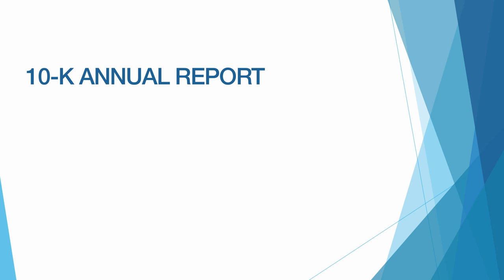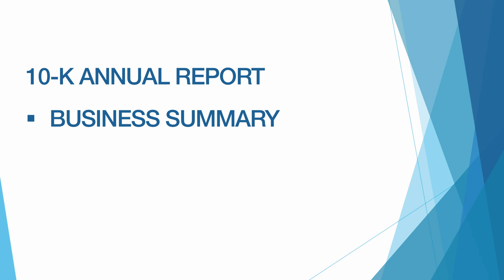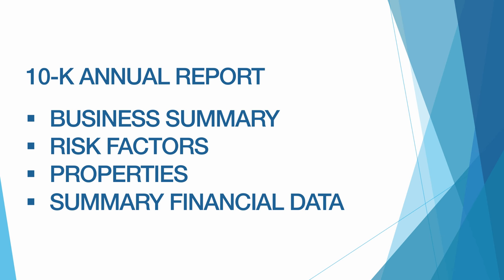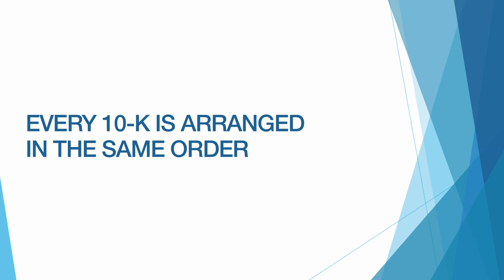There are four sections of the 10-K we will look at closely: the Business Summary, a Summary of the Company's Risk Factors, a List of the Company's Properties, and the Selected Financial Data Table. Keep in mind that information in every 10-K is arranged in the same order, so the Annual Report of the company you're investigating will have the same sections in about the same place as the Annual Report we will look at in this video.